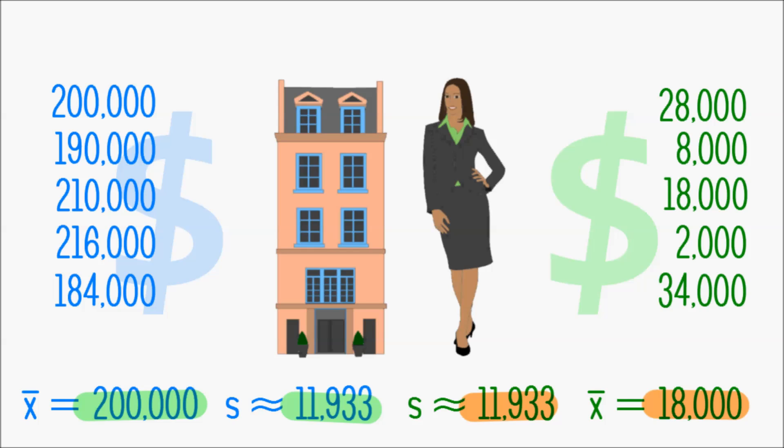We therefore should always look at both, average and standard deviation. Or we simply combine the two by dividing the standard deviation by the arithmetic mean.